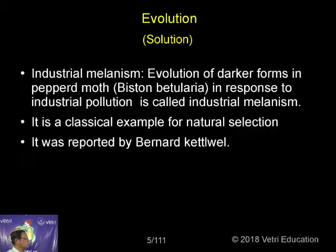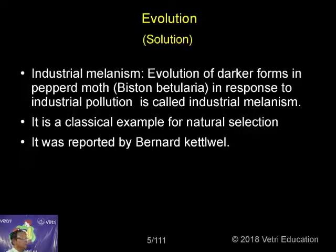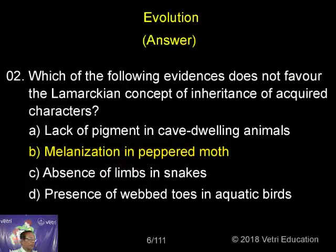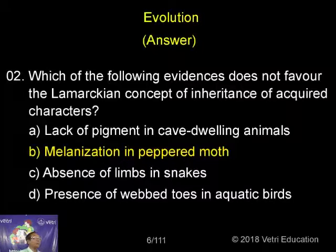The evolution of darker forms in peppered moth, Biston betularia, in response to industrial pollution is called industrial melanism. It is a classical example of natural selection, reported by Bernard Kettlewell. So melanisation in peppered moth is not the inheritance of acquired characters — it is the natural selection process that selects the adaptive, fittest organisms suitable to survive. It is not the inheritance of acquired characters.